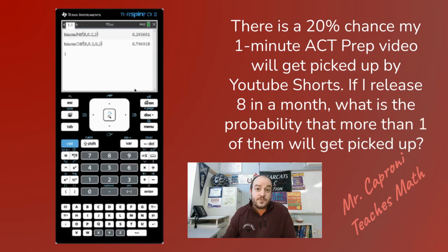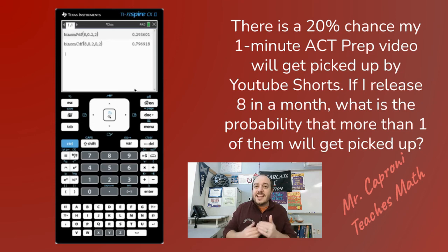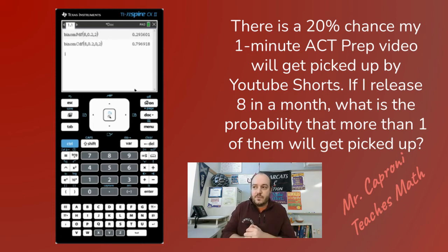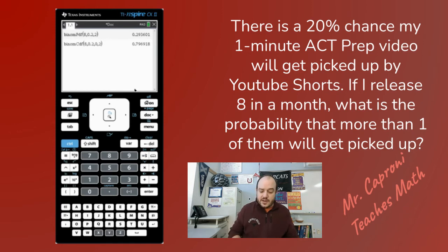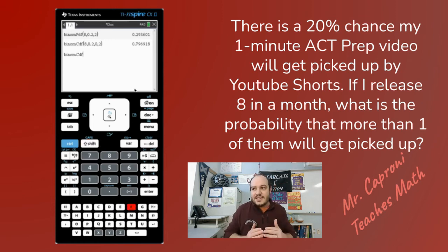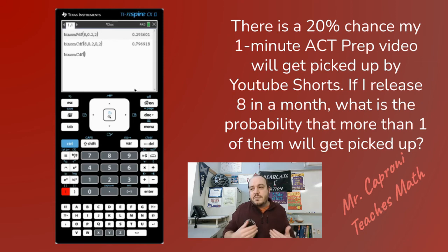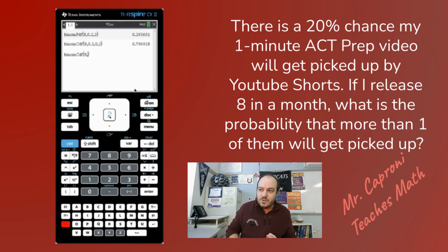For the last example we're doing another CDF — this time 'more than one' — but instead of using the menu, I'm going to type it in directly now that we've already done it through the menu. With a blinking cursor, I just type 'binomCdf' and you'll notice it changes from italicized to normal font the moment the calculator recognizes it as a defined function. Then I open parentheses and enter the same inputs: eight for trials, 0.20 for probability of success.